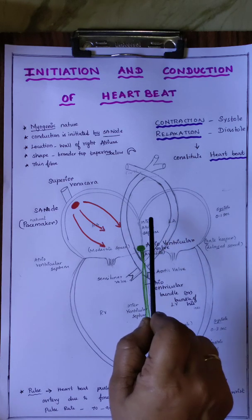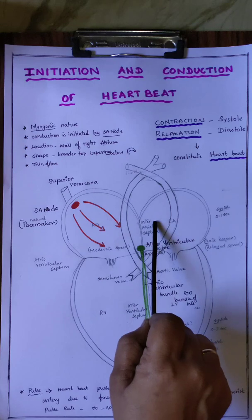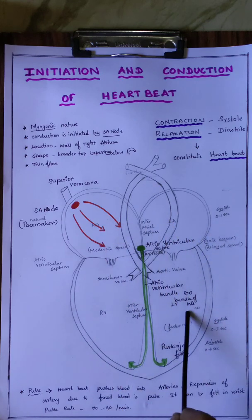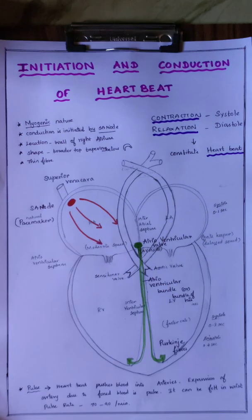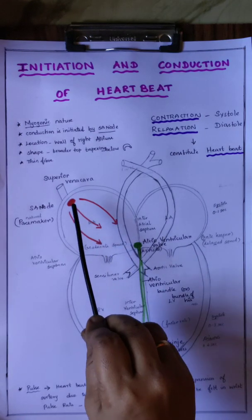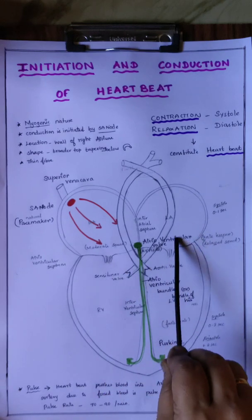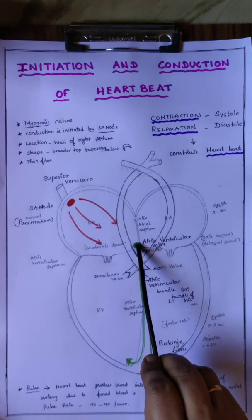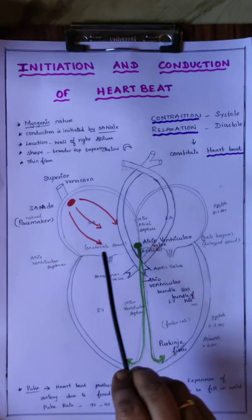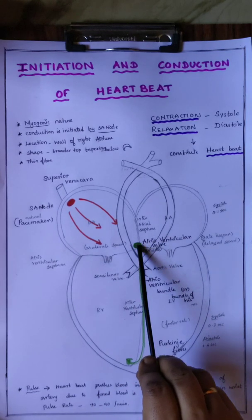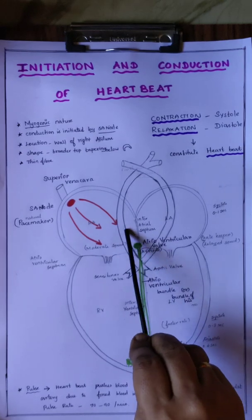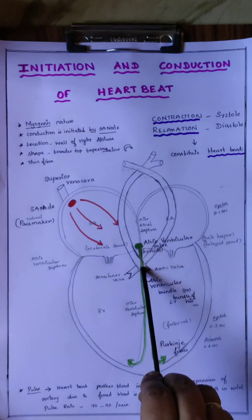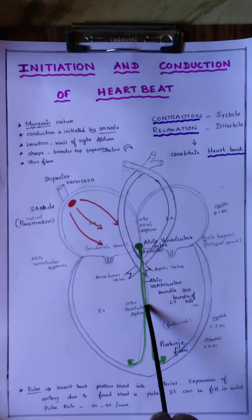That contraction is systole, which pushes the blood to the ventricles. At this stage of atrial contraction, the ventricle will be in a relaxed state. Then the impulse produced by the sinoatrial node cannot pass through the atrio-ventricular septum. Instead, it can pass only through the atrio-ventricular node — the AV node. Only through this atrio-ventricular node can electric impulses be carried to the ventricle. The impulse is then carried to the atrio-ventricular bundle.